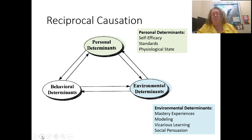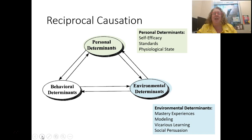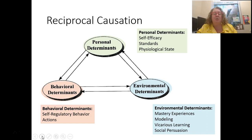Our environmental determinants include mastery or lack of mastery experiences — was I successful in my last opportunity, where success is determined by my personal determinants? Modeling — who is my role model, have I seen someone else experience this? Vicarious learning — watching someone else learn a lesson, like my little brother touching a hot stove. And social persuasion — how does my peer group affect whether I engage? If I'm friends with honor roll kids, that's positive social persuasion; if my peer group tends not to be engaged in school, I may be less likely to engage in positive behaviors.